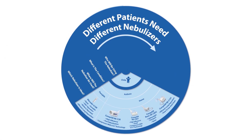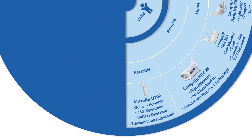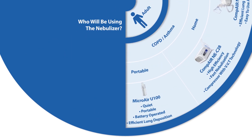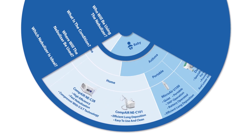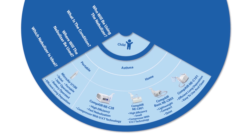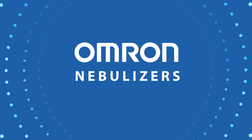How do I find the right nebulizer? Different patients have different needs. To find a suitable nebulizer, consider three key questions: who will be using the nebulizer, what is the patient's respiratory condition, and where will the nebulizer be used. For example, if you want to be prepared anywhere for your little one with asthma, you should consider the Omron Micro Air U100. Refer to the Omron website to select a suitable nebulizer for you. Breathe better with Omron.